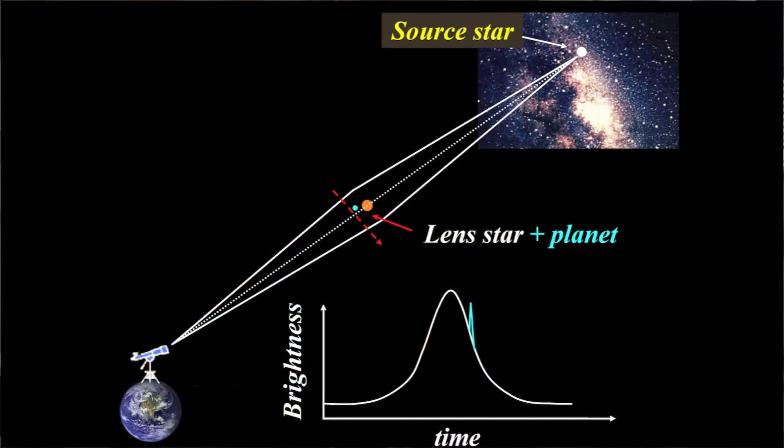Now if the star that's actually doing the magnifying, what we call the lens star, if that happens to have planets around it, then that causes an additional magnification or bending of the light and that's something that we can detect.